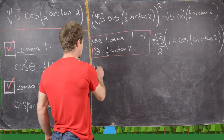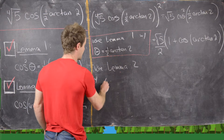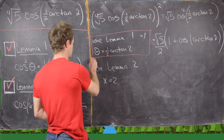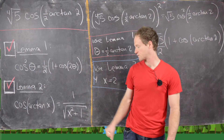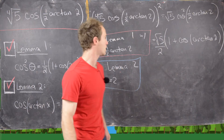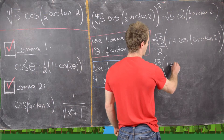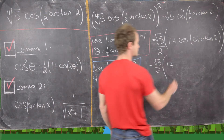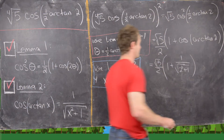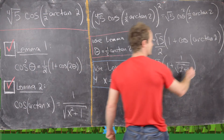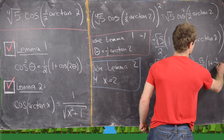Next we use Lemma 2 with x equal to two. Lemma 2 says cosine of arctan x is one over the square root of x squared plus one, so cosine of arctan 2 equals one over the square root of two squared plus one. That gives us the square root of five over two times (1 + one over the square root of five).